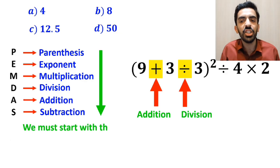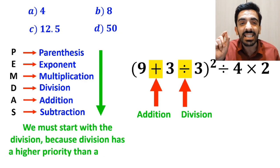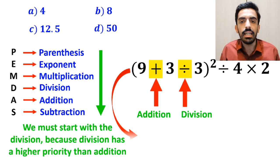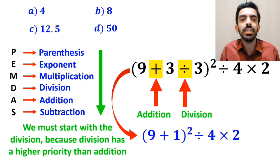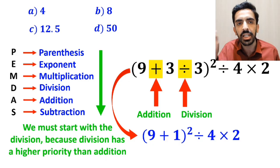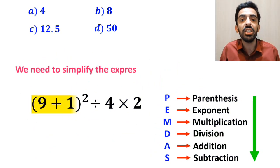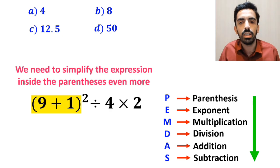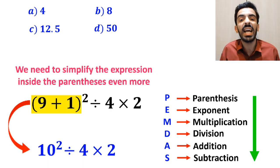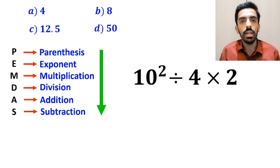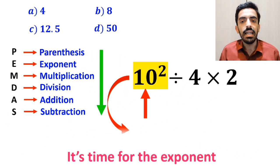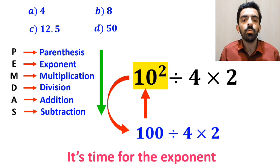We must start with the division, because division has a higher priority than addition. So instead of this expression, we can write (9 plus 1) inside the parenthesis, all squared, divided by 4 multiplied by 2. In the next step, we simplify the expression inside the parenthesis to get 10 squared divided by 4 multiplied by 2. Now it's time for the exponent, so we write 100 divided by 4 multiplied by 2.